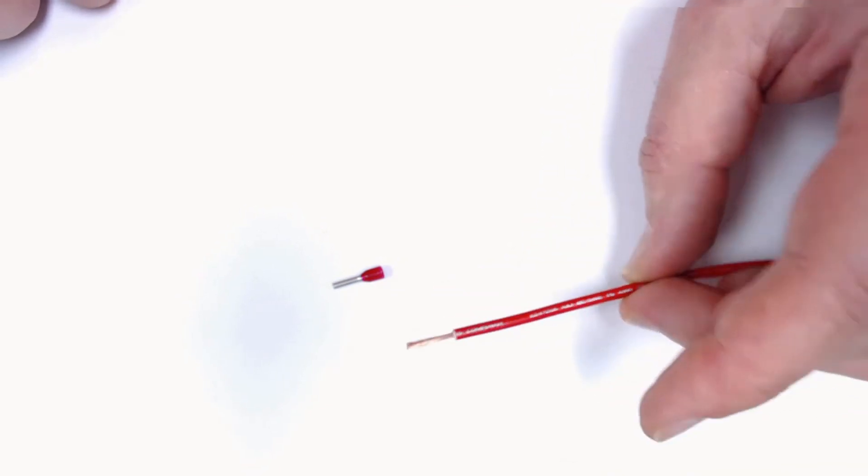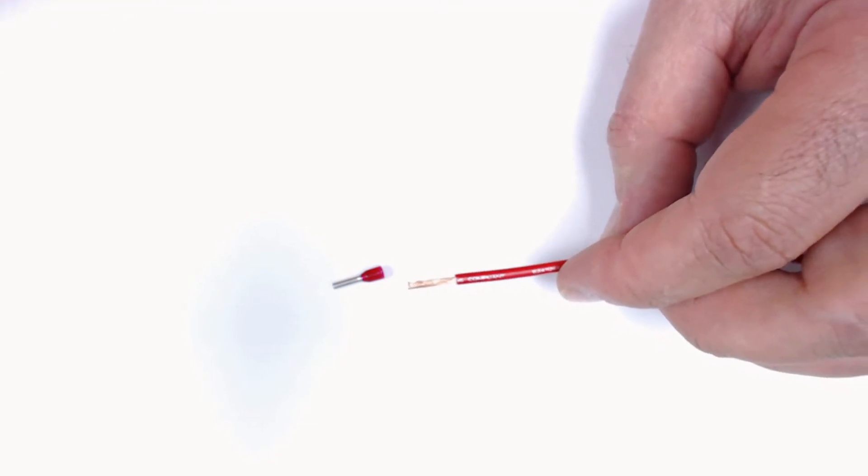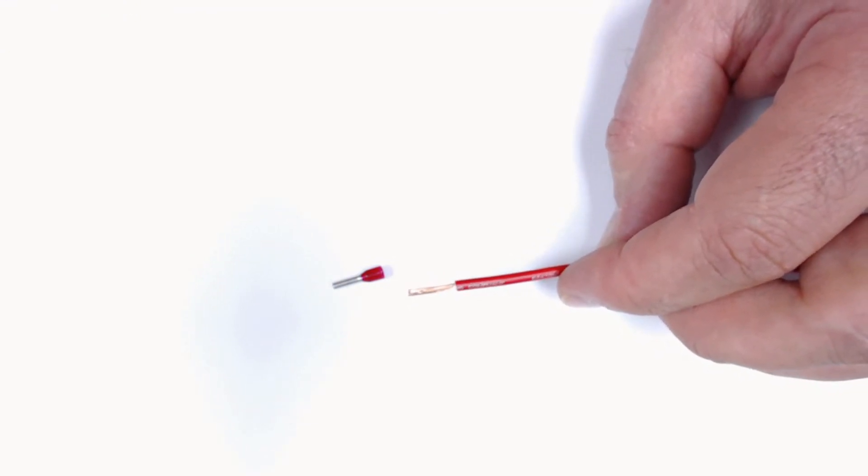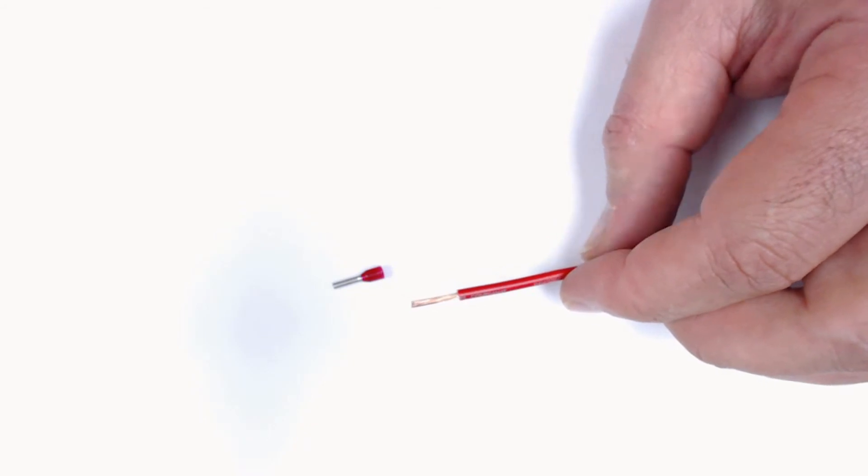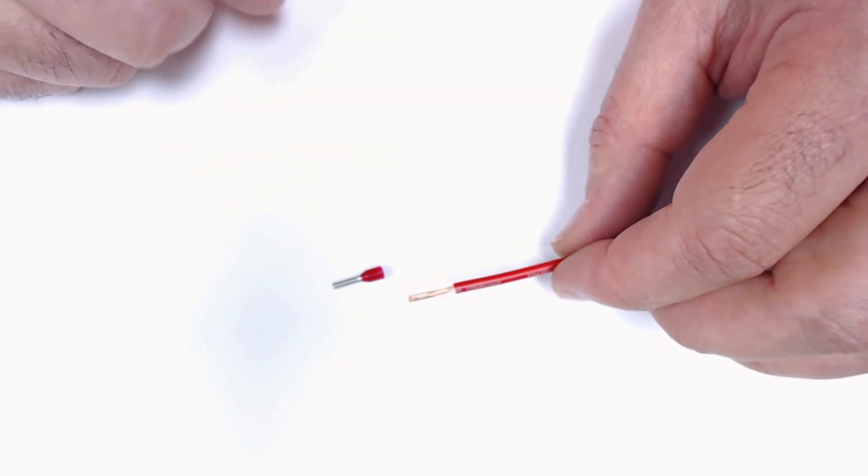This is some MTW that we use here. This is 16-gauge MTW. It's a very flexible wire. I recommend it for robotic applications because of that, and it's fairly inexpensive.